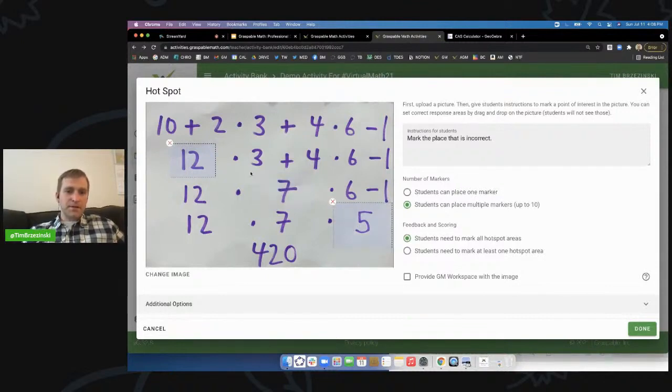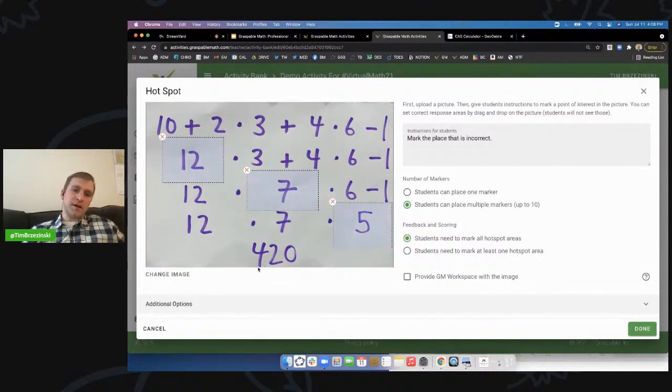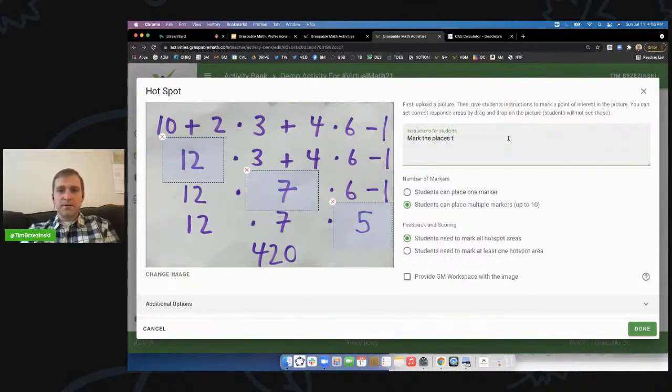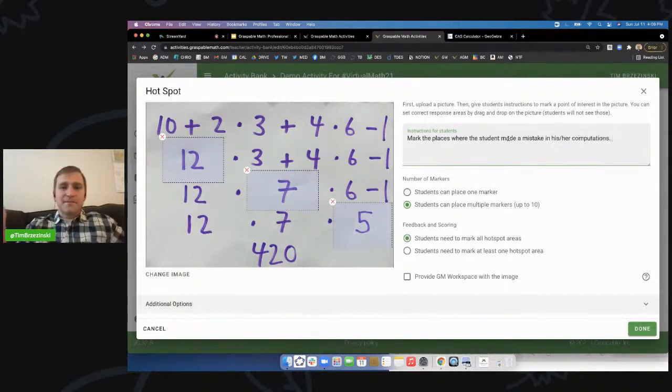So there, maybe I'll make this area bigger here. See what I mean? And maybe I should make that 12 bigger. Again, just press your finger down. This is where all the mistakes are going to happen right here. Something like that. And the 420 is a mistake too, because it's all correct, but you're wrong. But I mean, I don't know. I guess that's us teachers. Do I have them place? Maybe I tell them to mark the places where the student made a mistake in his or her computations. Something like that. Right.